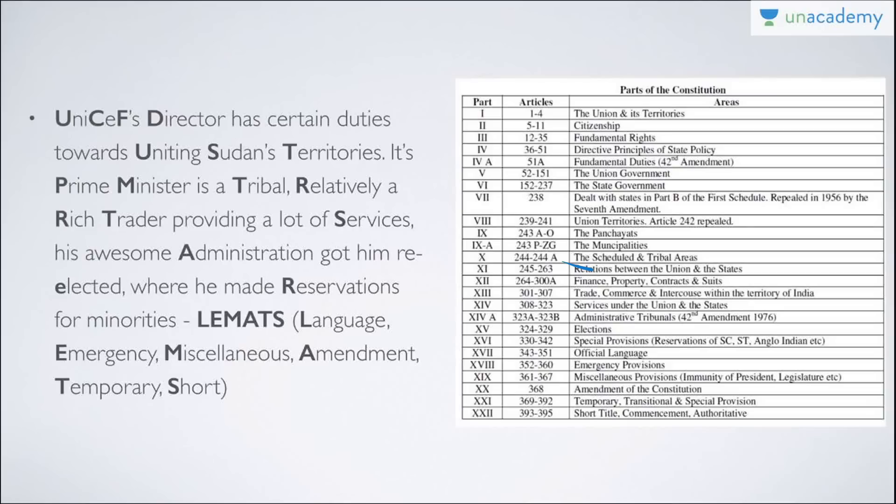So here is the full mnemonic sentence: 'UNICEF Director has certain duties towards uniting Sudan's territories. Its Prime Minister is a tribal, relatively rich, a trader, providing a lot of services, and his awesome administration got him re-elected where he made reservations for minorities — Lemets.' If you repeat it five or six times, you will remember all the parts of the Indian Constitution — I personally guarantee it.